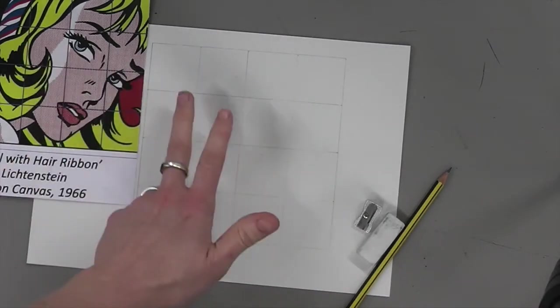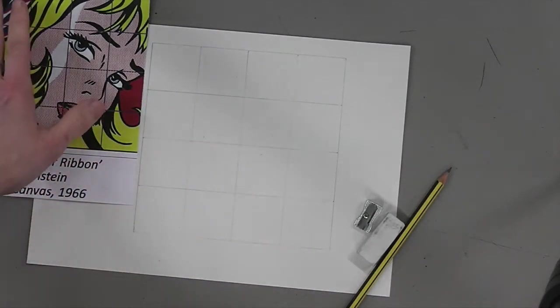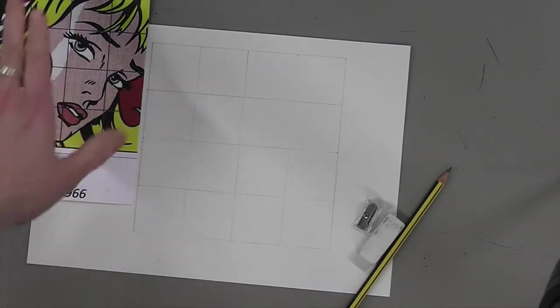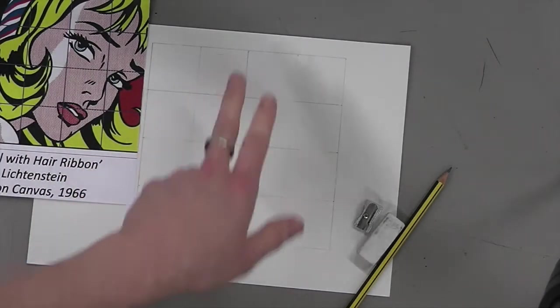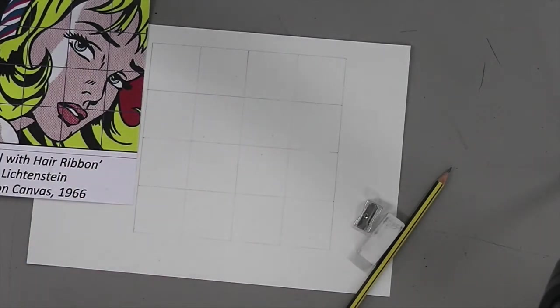Those grid lines, because the image is square, marry up really nicely. So we can work through box by box, making sure all of our lines are accurate across the whole of the picture.